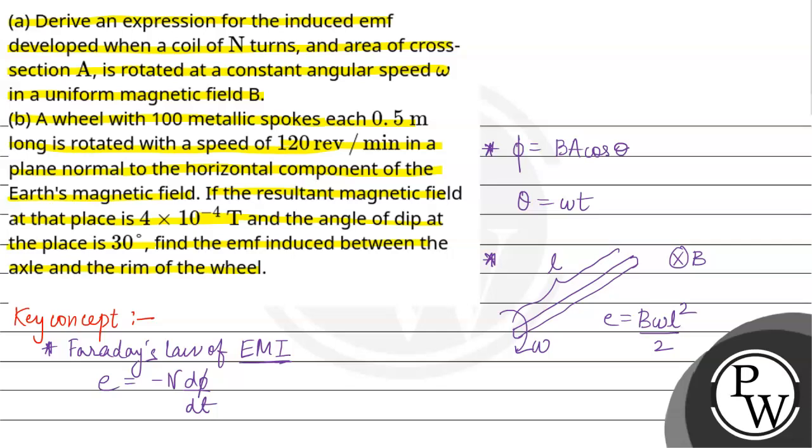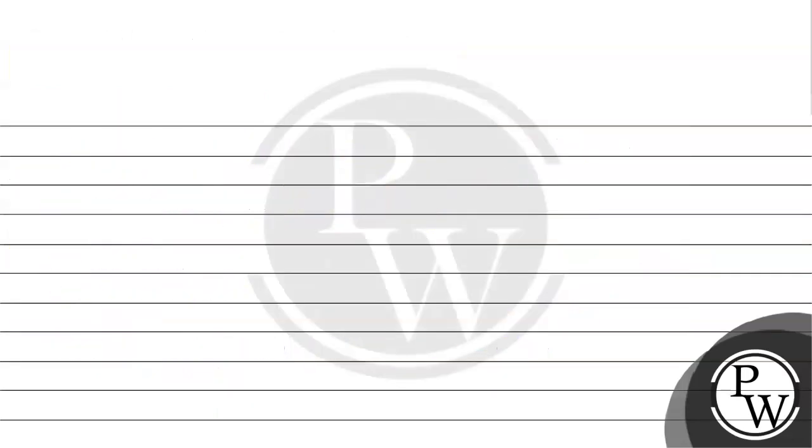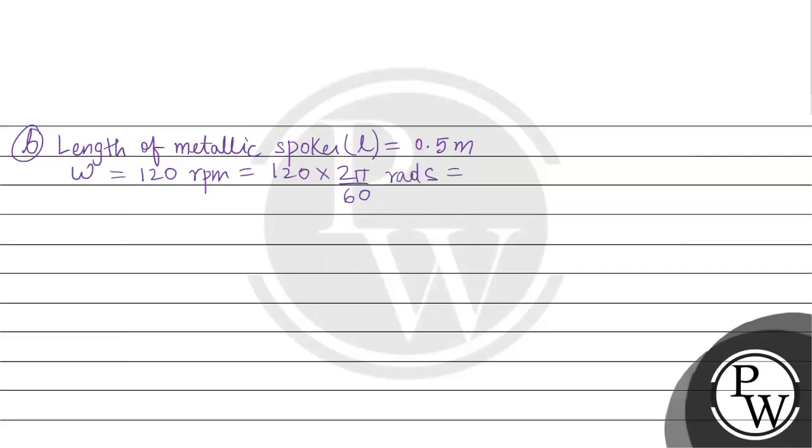Second part: you have 100 metallic spokes, each 0.5 meter long. The length of metallic spokes L is 0.5 meter. The value of omega is 120 RPM, which is 120 times 2 pi over 60 radians per second, which equals 4 pi radians per second.